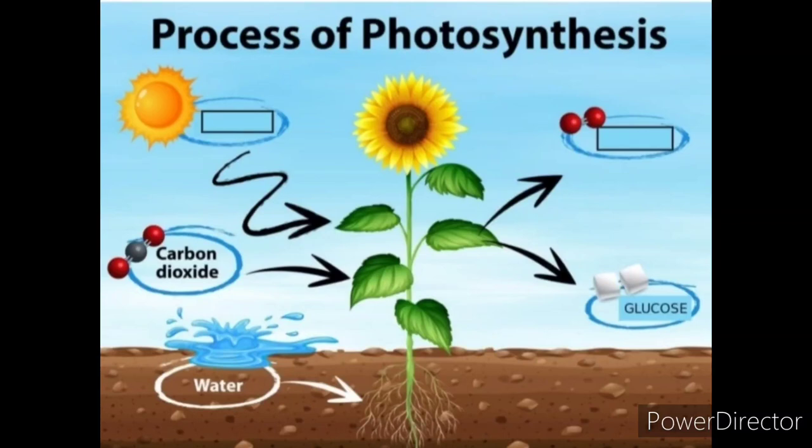Hi boys, in the previous classes we were discussing the process by which green plants prepare their food and this process is known as photosynthesis. Through photosynthesis, green plants absorb carbon dioxide and after the preparation of food along with glucose, they release another gas named oxygen.